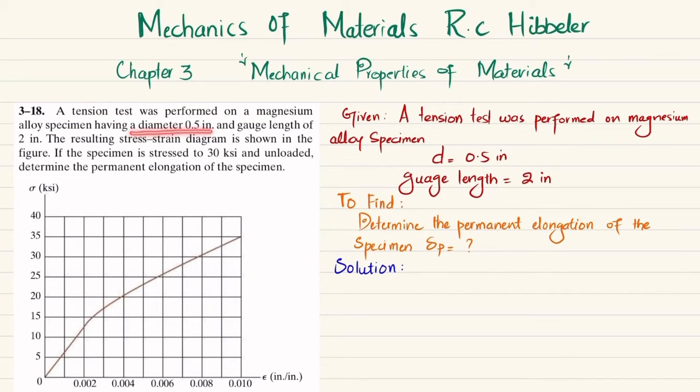The specimen has a 0.5 inch diameter and gauge length of 2 inches. The resulting stress-strain diagram is shown in the figure. If the specimen is stressed to 30 ksi and unloaded, determine the permanent elongation in the specimen.